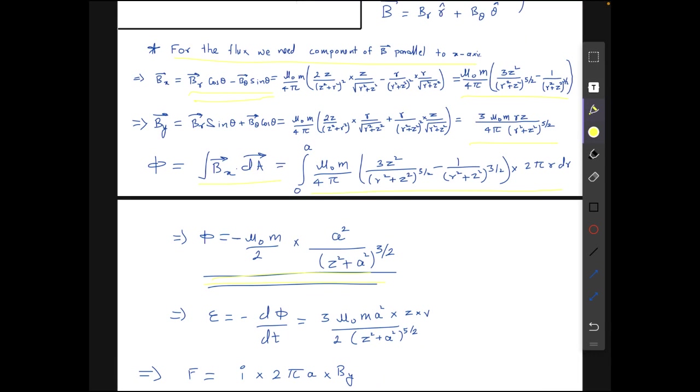The emf generated will be minus d phi by dt. Differentiating this once and we know that dz by dt equals to V so we have used that here. Finally what we get is emf equals to 3 mu not m a square times z v over 2 times z square plus a square to the power 5 by 2.